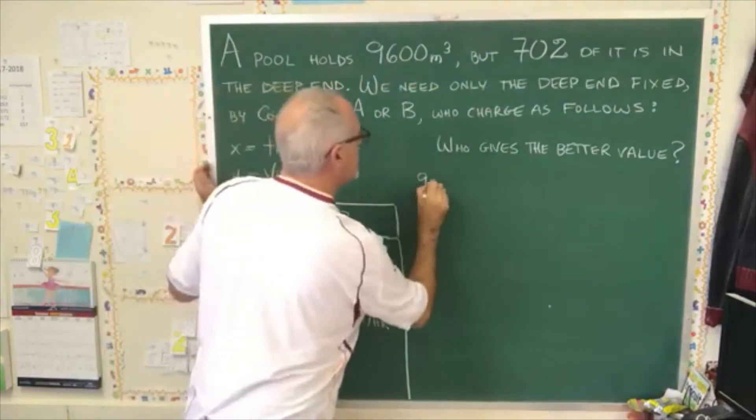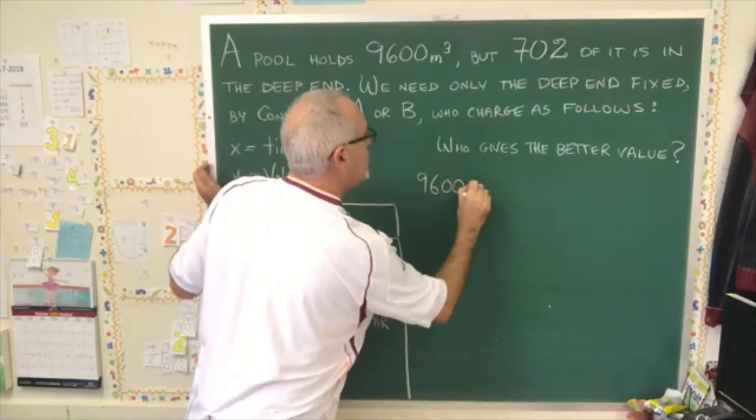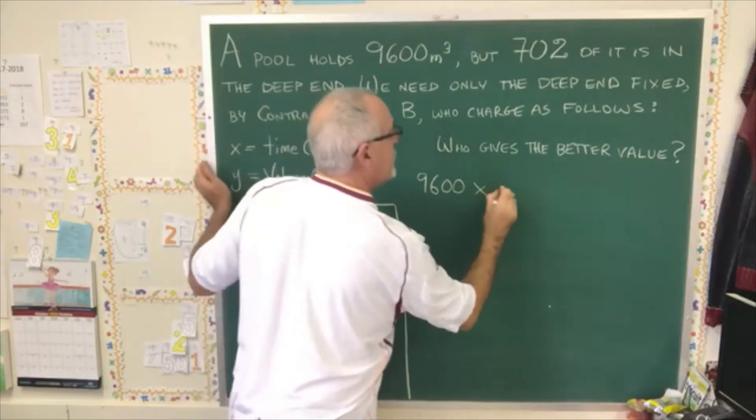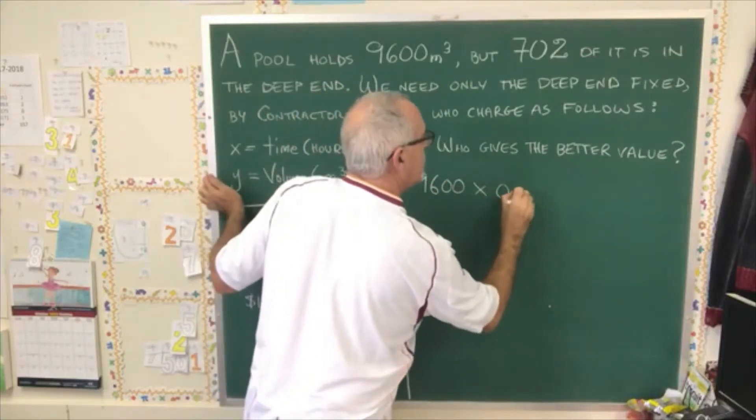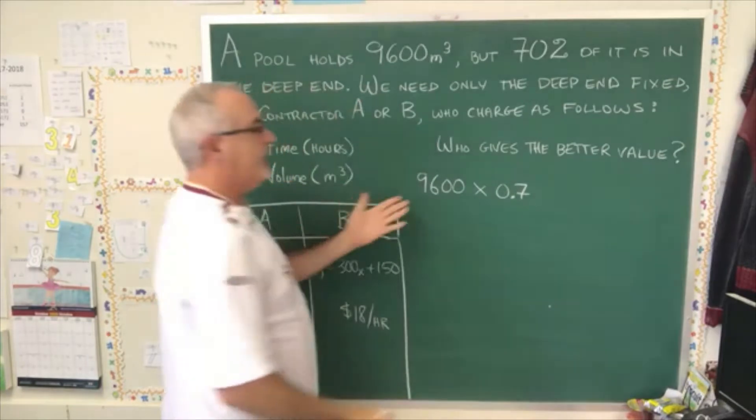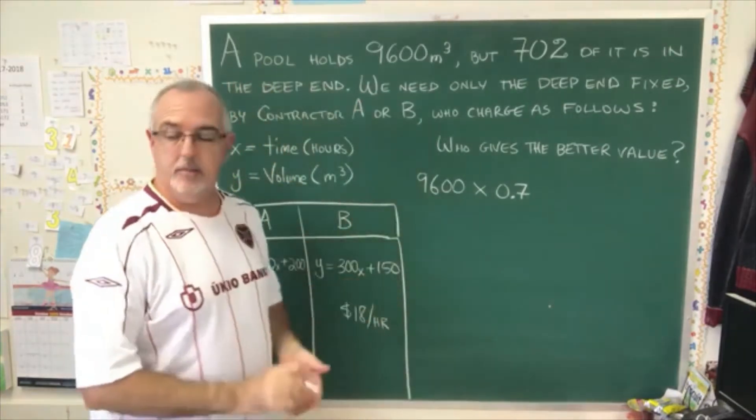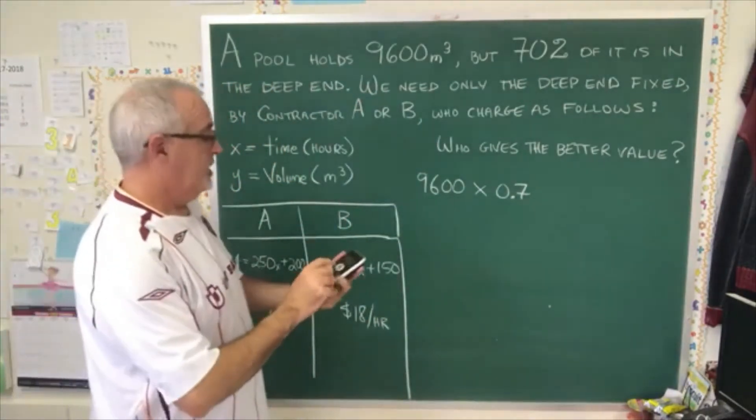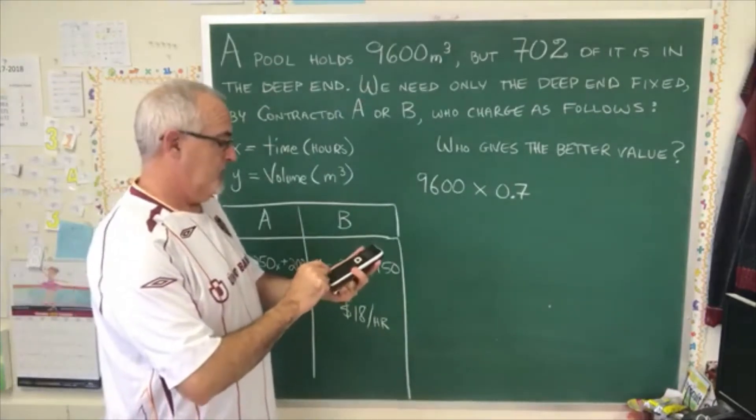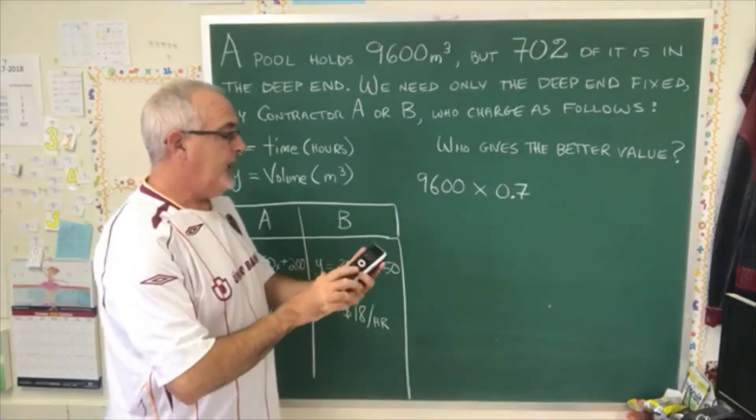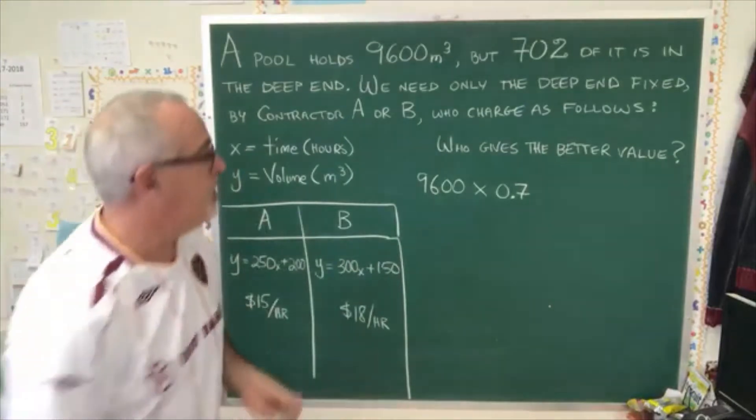We do 9600 meters cubed times 70%, so I'm just going to write times 0.7, the decimal version of 70%. And we get 6720 meters cubed.